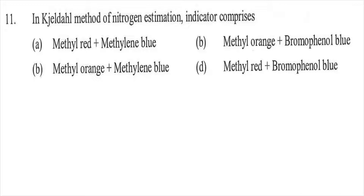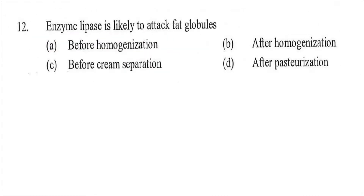Question eleven: In the Kjeldahl method of nitrogen estimation, the indicator comprises — option A methyl red plus methylene blue, option B methyl red only, option C methylene blue only, or option D none. The right answer is A, methyl red plus methylene blue.